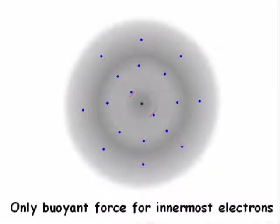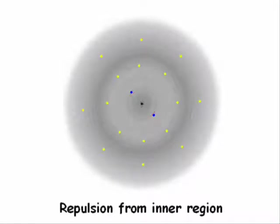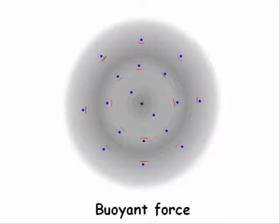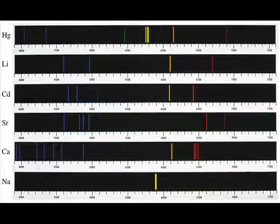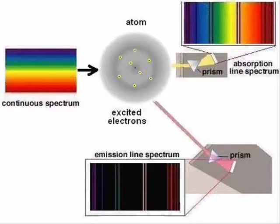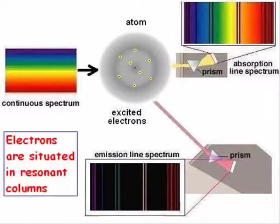Buoyant force is the only force that prevents the innermost electrons of an atom from falling into the nucleus. For electrons other than those nearest to the nucleus, repulsion from inner-region electrons as well as the buoyant force exerted by space matter keep the electrons in their respective positions. Since an atom creates its own characteristic pattern of spectral lines when excited, and in the cold state the same atom creates absorption lines at the same frequencies as its emission lines,